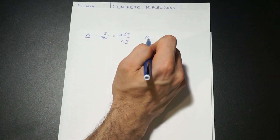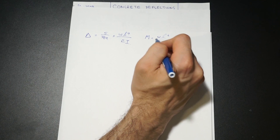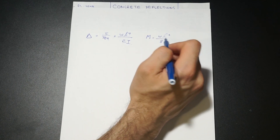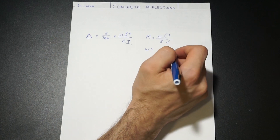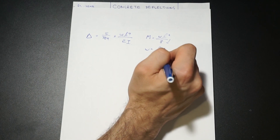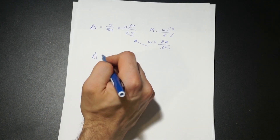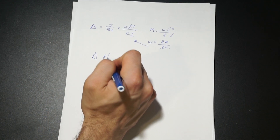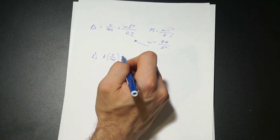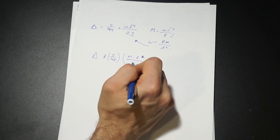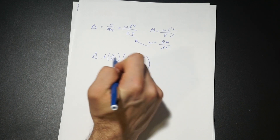If we solve for the maximum bending moment for a simply supported beam with a uniformly distributed load, we know it's WL squared over 8. Solving for W gives us 8M over L squared. Plugging that back into our formula, we get K times 5 over 48 times M times L squared over EC times IE. I added IE and K to the formula.